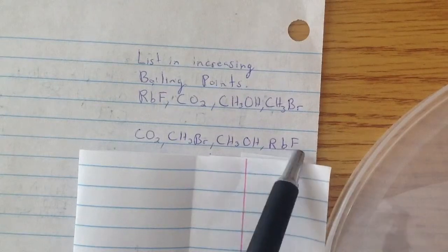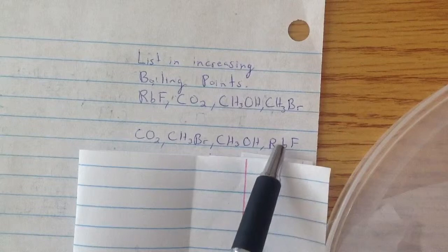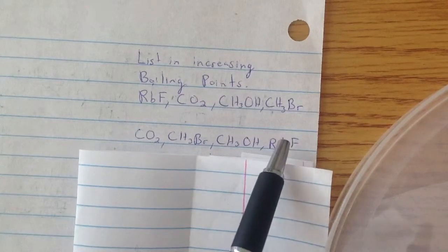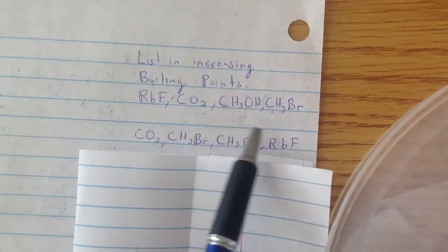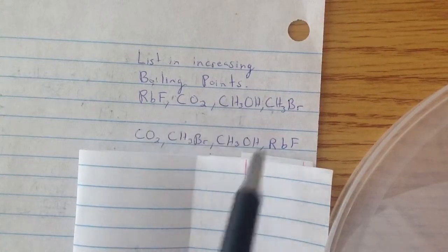But here, it's almost completely taken away. So these ions are going to be full charges, and they're going to be a lot stronger than these. So this is the list of these compounds in increasing boiling points.